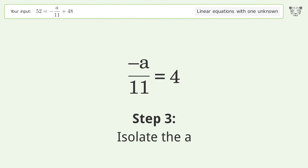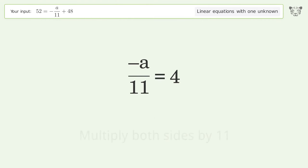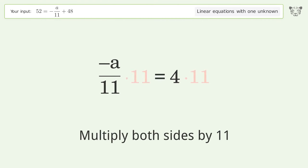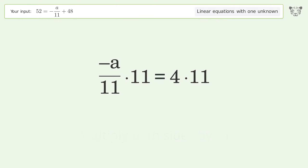Isolate the variable a — multiply both sides by 11. Then group like terms.